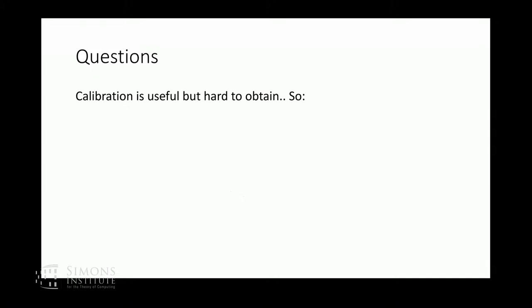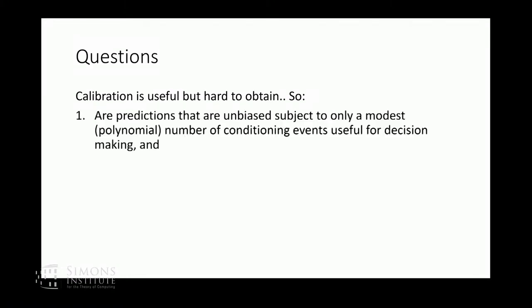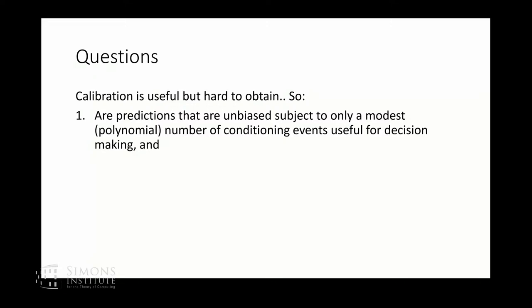Why is calibration hard in d dimensions? Is it because there are exponentially many predictions I can make — my action space is exponentially large? Or is it only because the number of constraints I need to satisfy is exponentially large? Suppose I ask for d-dimensional predictions; there are still 2-to-the-d of them. But I only want them to be unbiased subject to a polynomial number of conditioning events. Now, can I solve that in polynomial time?